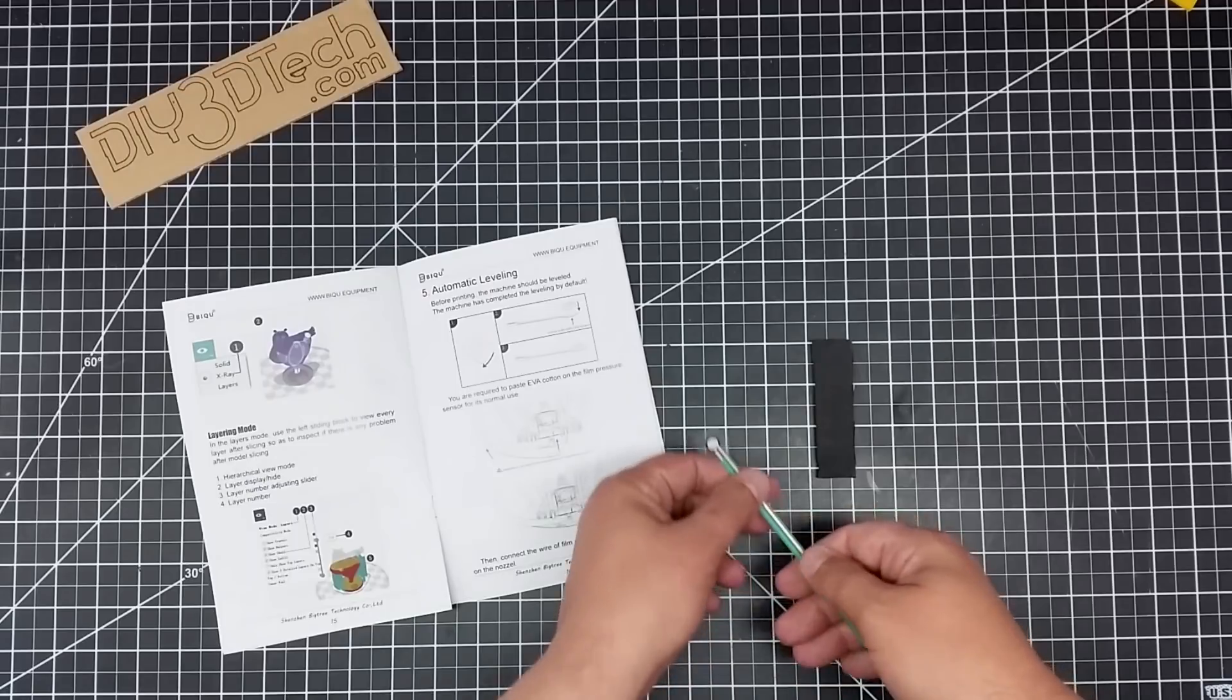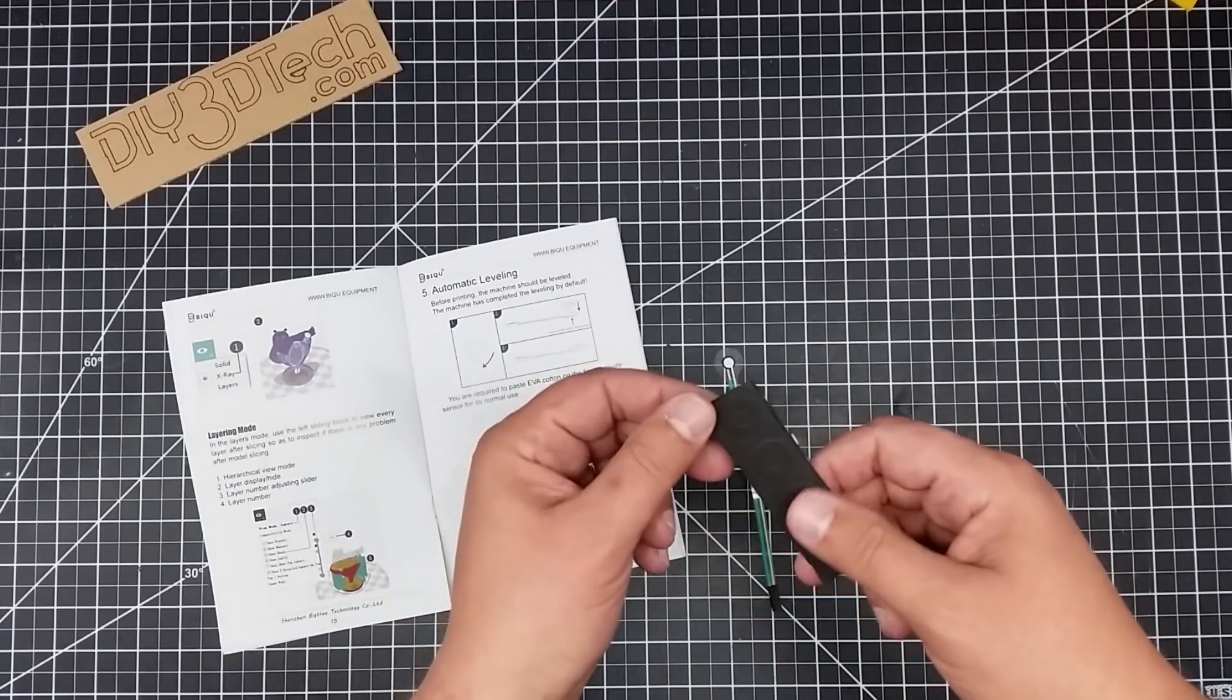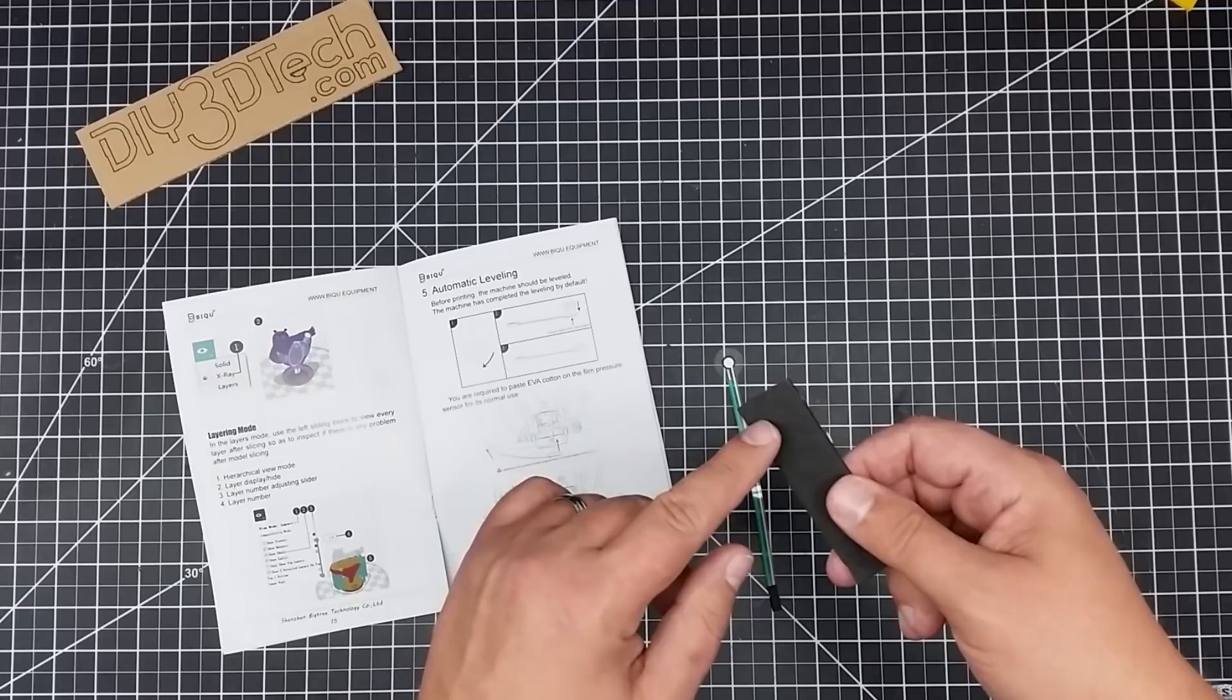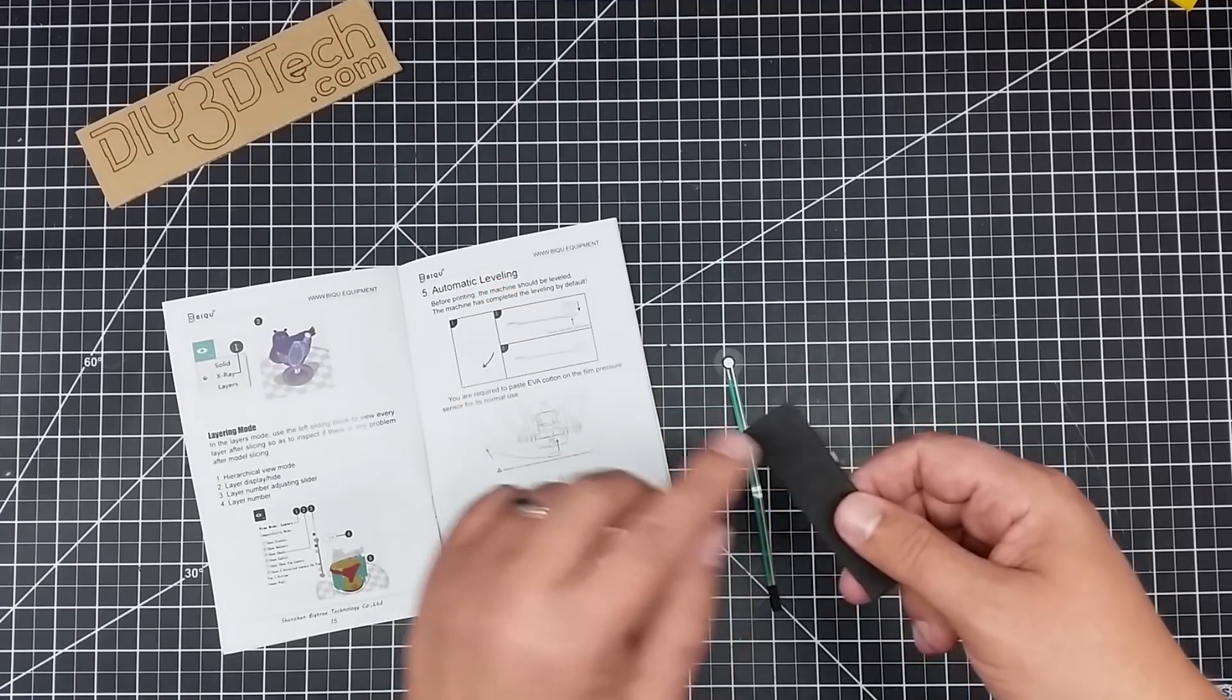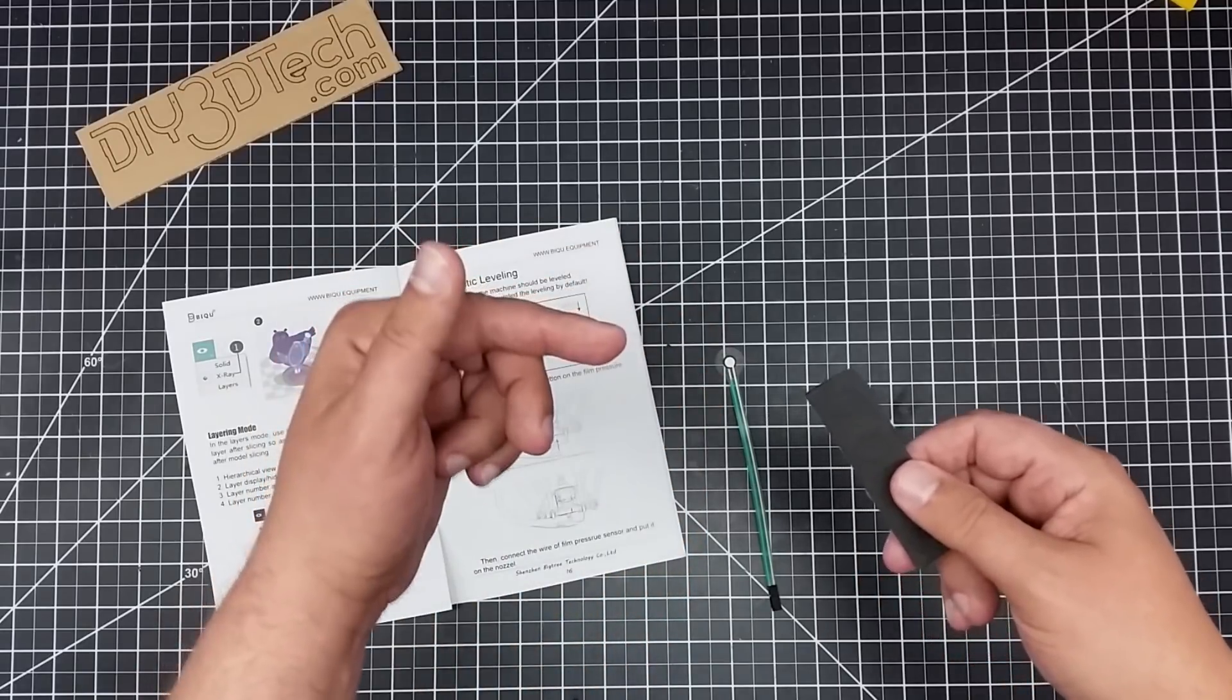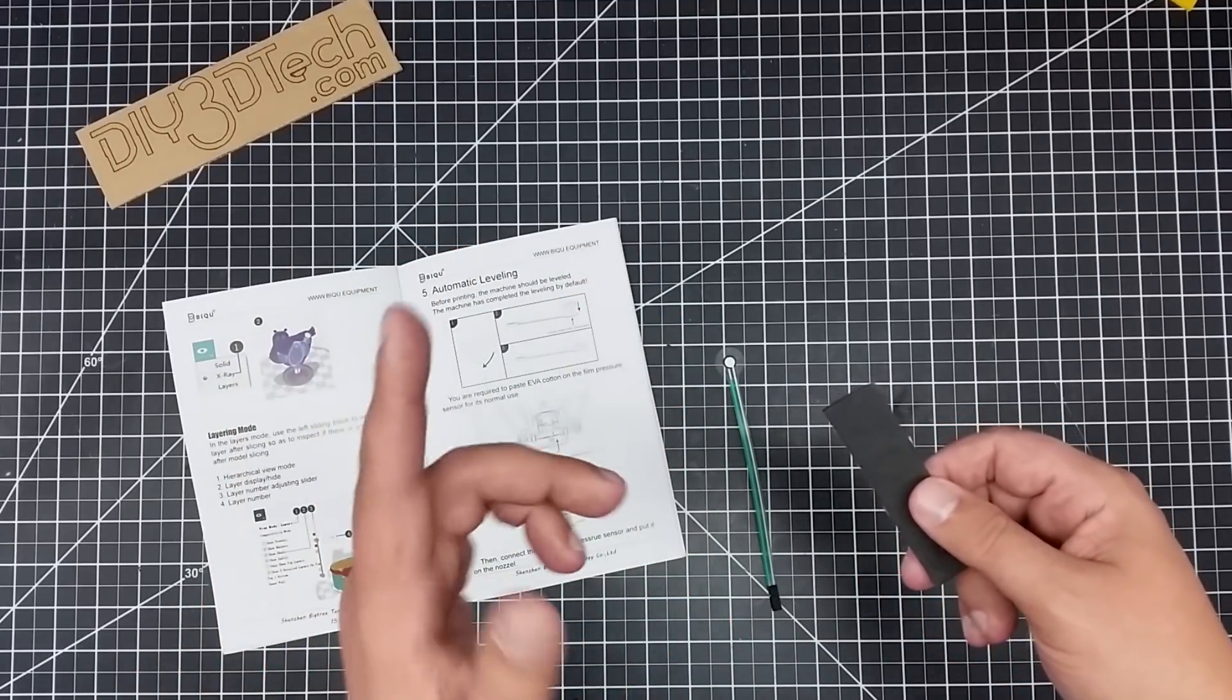Now one of the things to start off with is they give us four of these pads. Now the idea is this goes around your hot end, so do not heat up your hot end, and then this pad holds this sensor on the end and connects it.